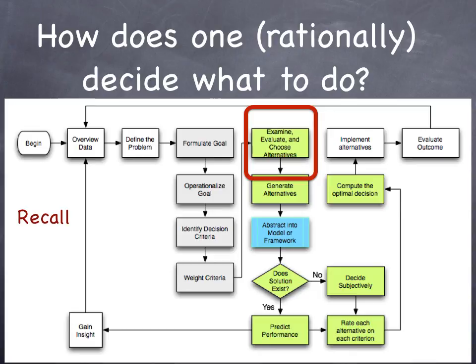The section in green — examine, evaluate, and choose alternatives — is what we're going to be talking about today. How do we do that? We need a model. The blue box says 'abstract into model or framework.' That's what we're going to do today.